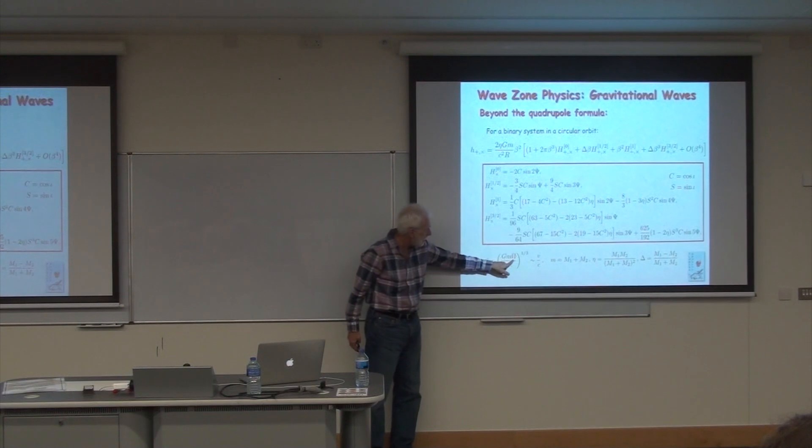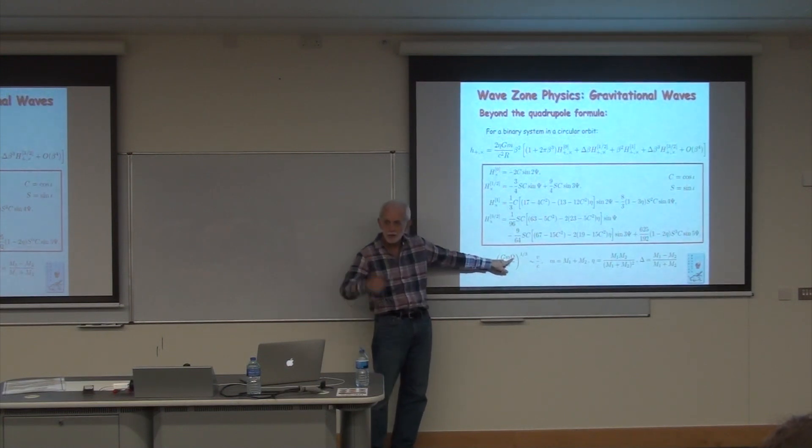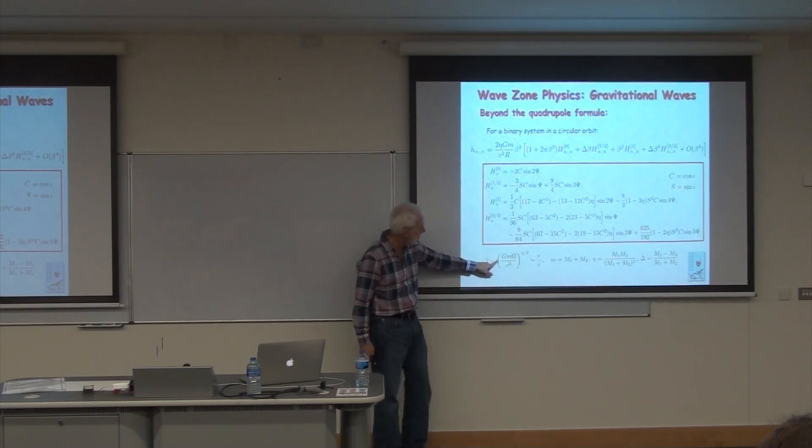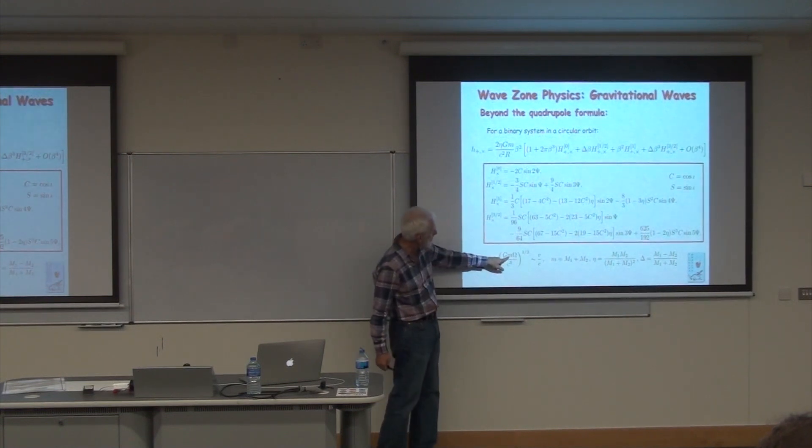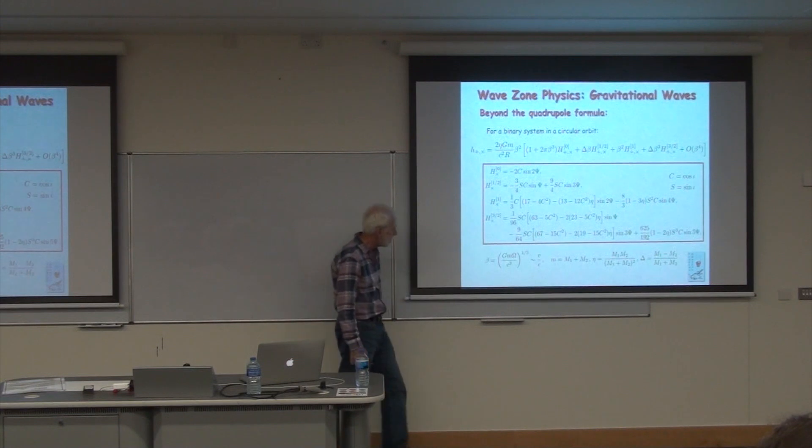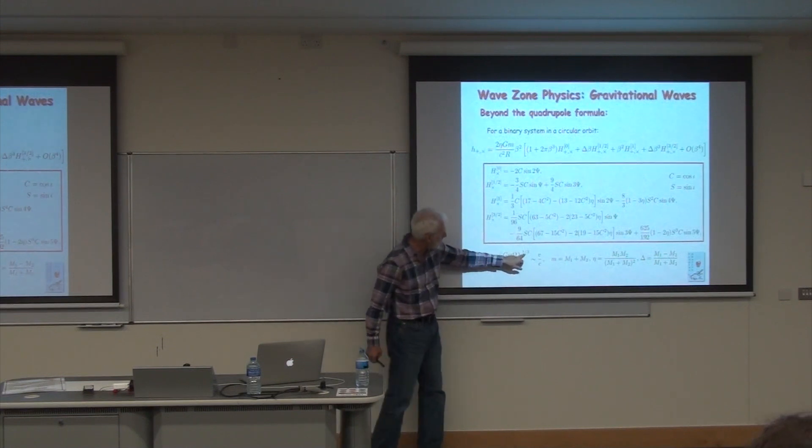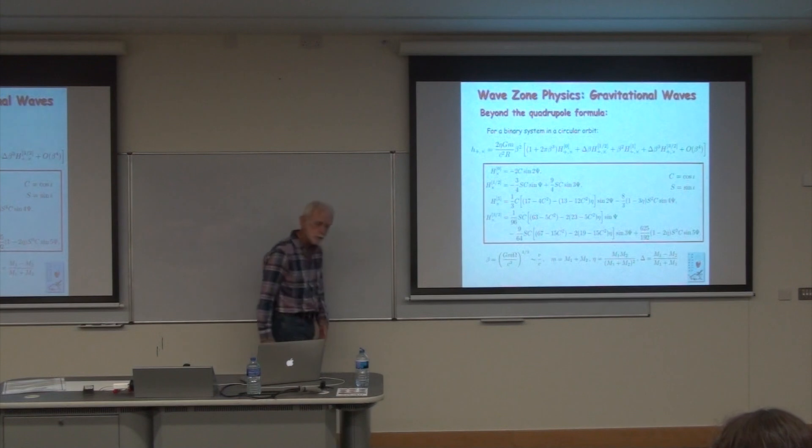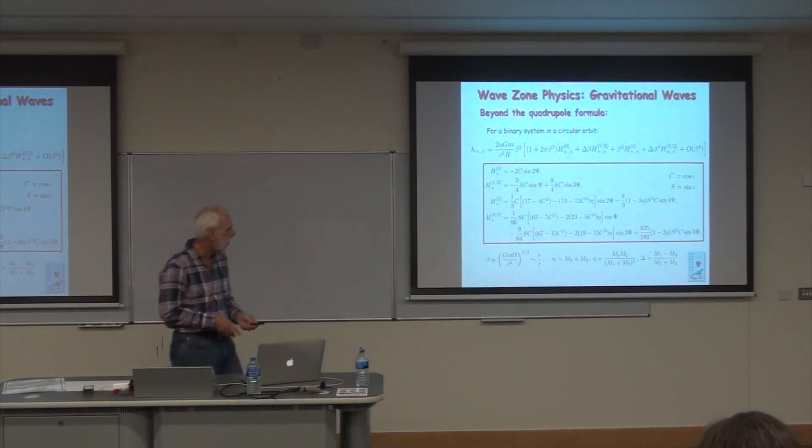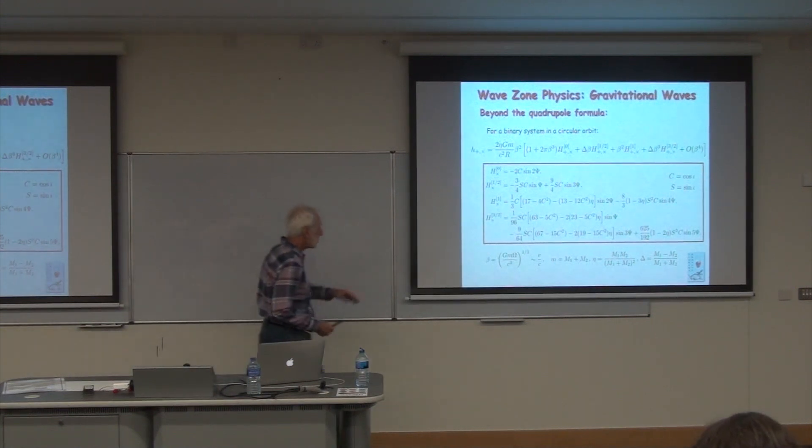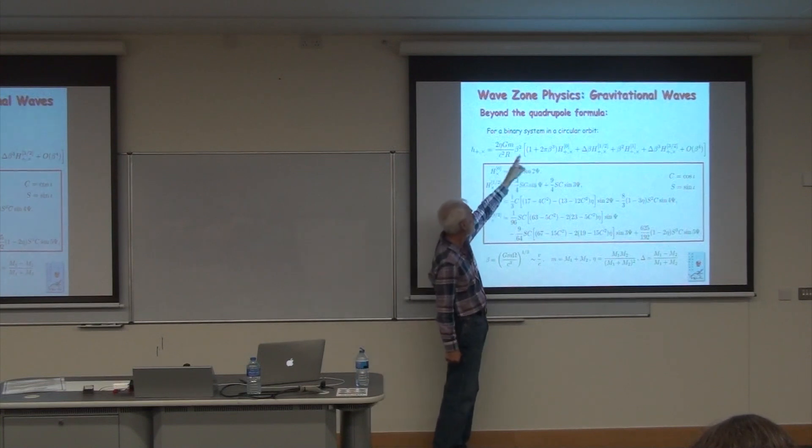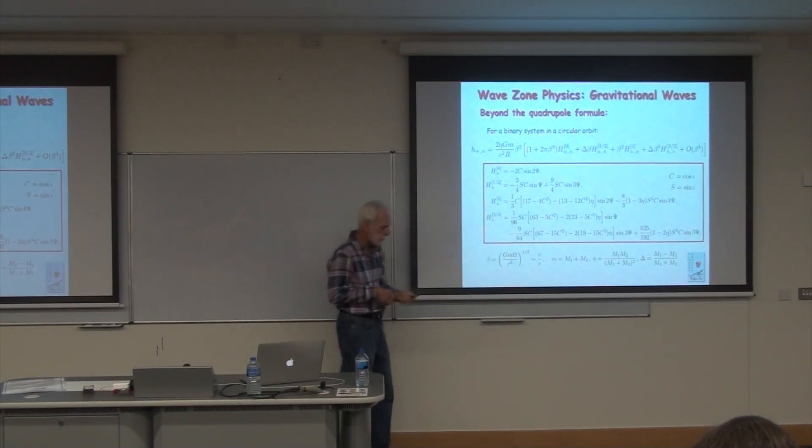The gravitational wave frequency is twice the orbital frequency because these are quadrupole waves. So if you define this quantity beta in terms of mass and your frequency over c cubed, the one-third power of that is, roughly speaking, v over c. Beta is our post-Newtonian expansion parameter. Because there are two time derivatives, we get a beta squared up front automatically.